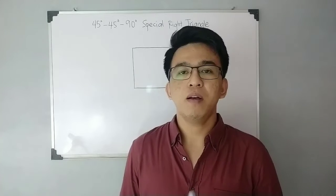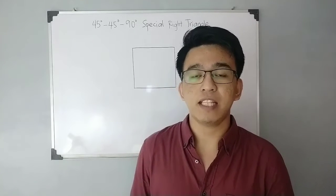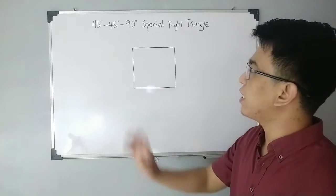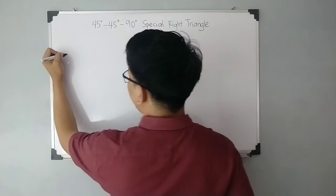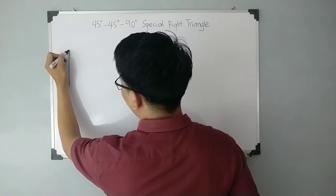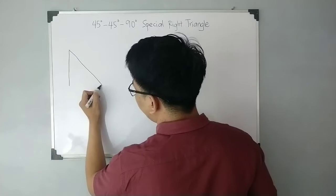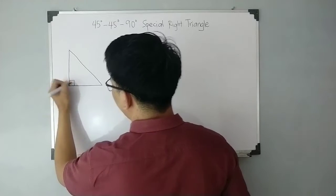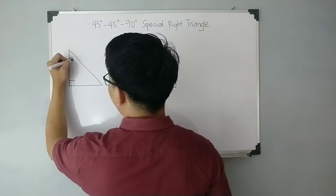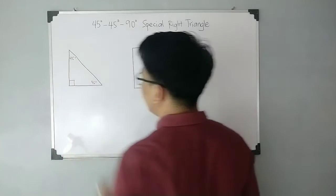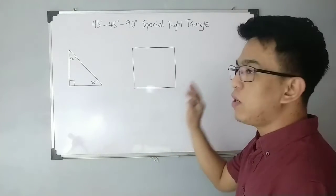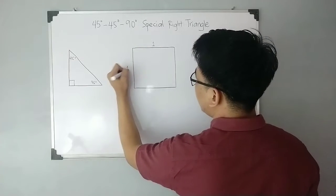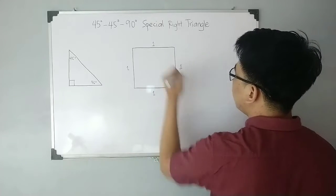In this part of our video I will show you the derivation of the 45-45-90 special right triangle. As you can see, I have here a square. This is the appearance or structure of your 45-45-90 special right triangle. To derive it, we will be using a unit square, meaning the length of each side measures one unit.